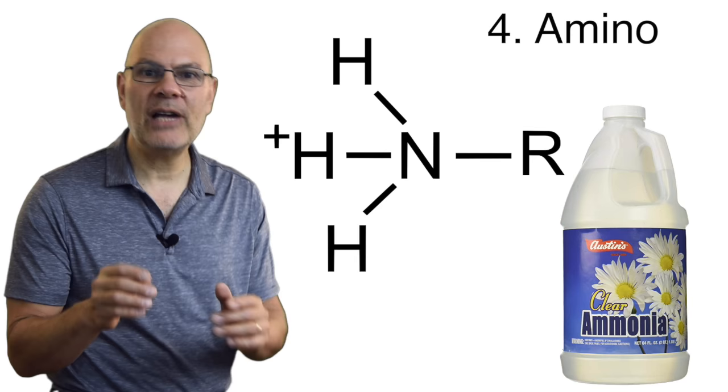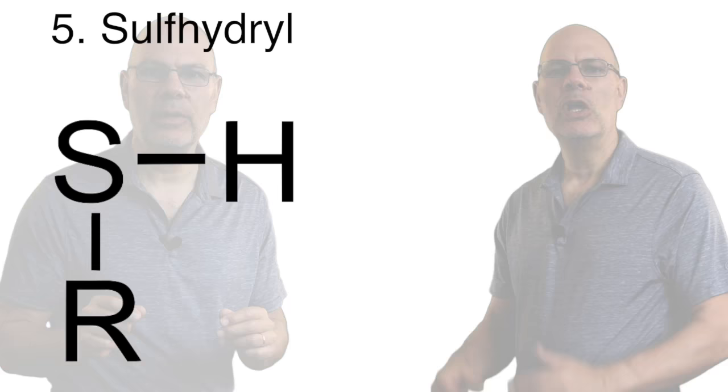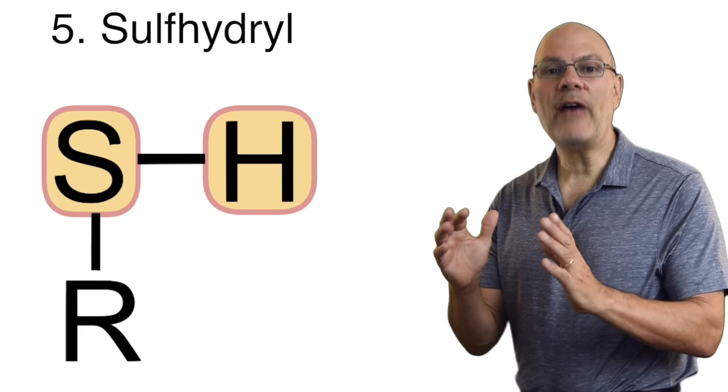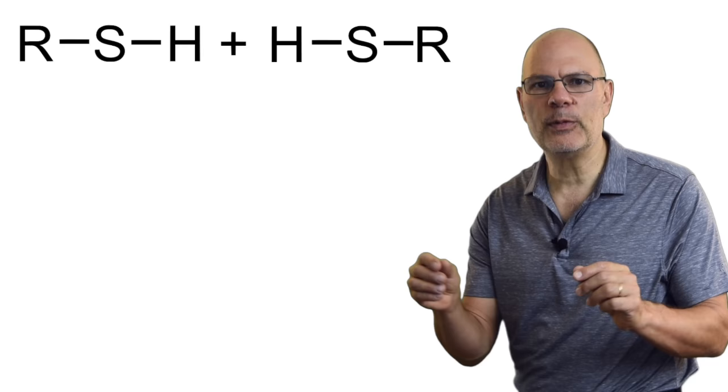Sulfhydryl groups consist of a sulfur bonded to a hydrogen. Sulfhydryl groups are important in determining the shape of proteins because when two sulfhydryl groups become close to one another, they can form a disulfide bridge. That creates turns and bends in a protein chain and that determines the protein's overall shape.